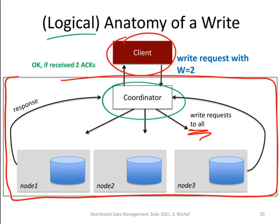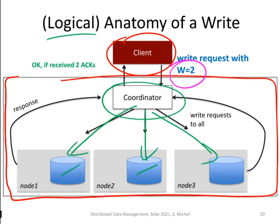When we are writing as a client, we can set a request that we want to have the acknowledgement of the write when two or more nodes have successfully processed the write. So when the coordinator sends the write requests to all of them, and node one and two have already processed the write, the response goes back to the coordinator. The coordinator sees that two have successfully written, and then sends OK back to the client. It does not mean that only node one and two will have the update — node three will also eventually get it — but we require only that two of the three have processed the write before we tell the client OK.